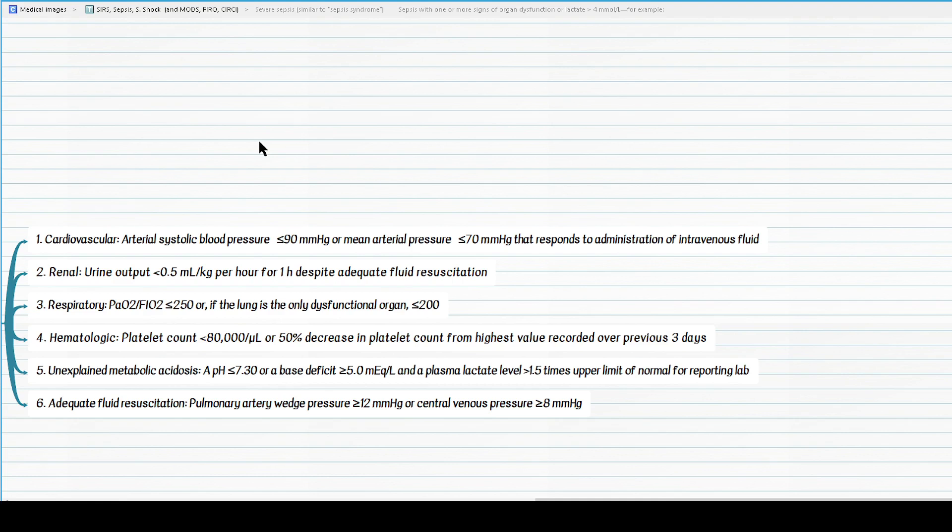Remember the pulmonary arterial wedge pressure of at least 12 or CVP of at least 8 indicates adequacy of fluid resuscitation. You can feel free to add these values to the values of mean arterial pressure of 70 or systolic blood pressure of 90 that if a patient fails to demonstrate these minimum standards or goals of fluid resuscitation, then we can consider this patient to be in septic shock.